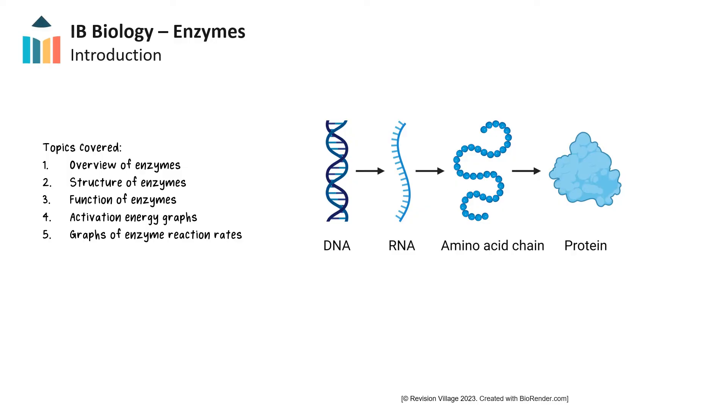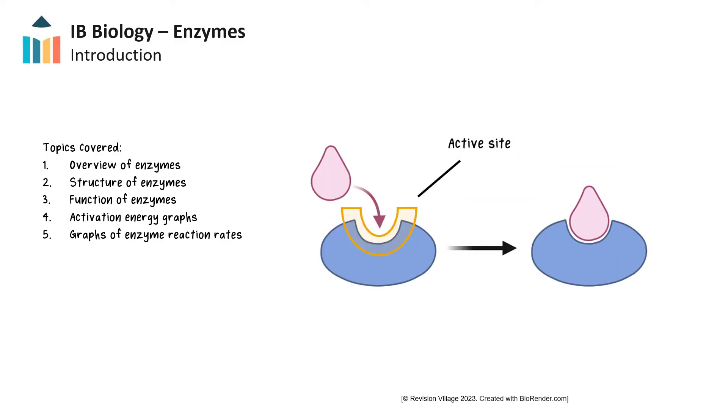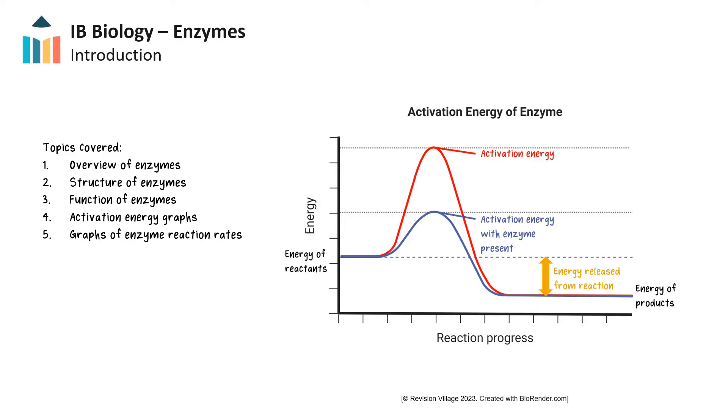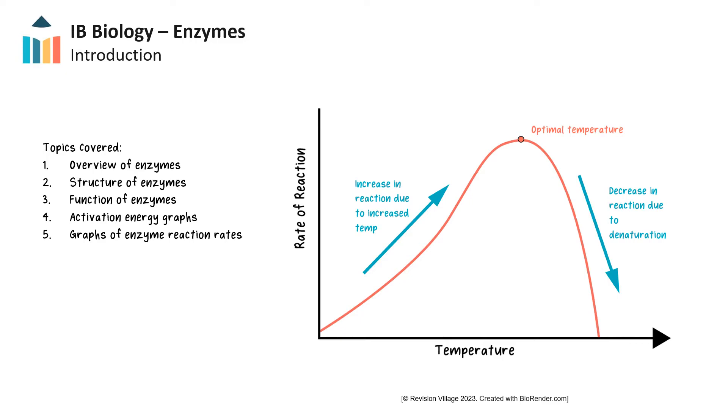The topics in this key concepts video are an overview of enzymes, the structure of enzymes and how it relates to enzyme substrate specificity, the function of enzymes in catalyzing chemical reactions, how to read activation energy graphs, as well as looking at graphs of different factors affecting enzyme reactions like temperature, pH, and substrate concentration. These key concepts are some of the most important topics covered in the IB biology course.